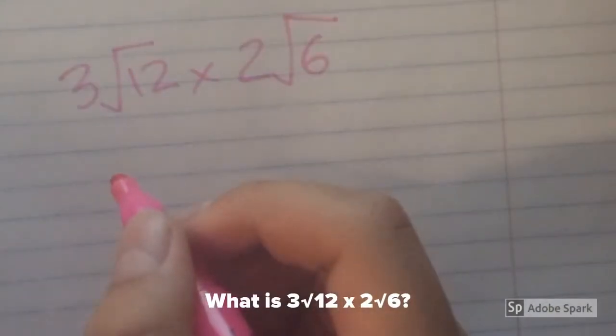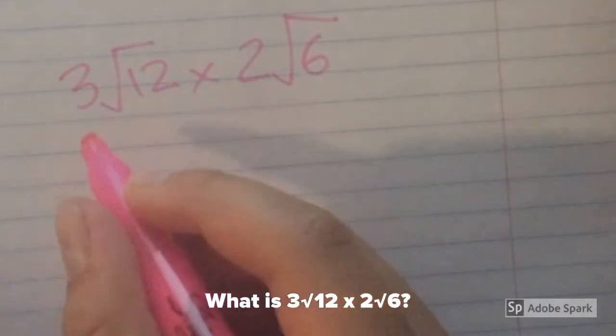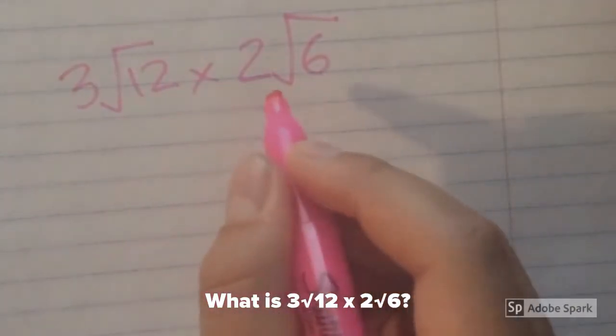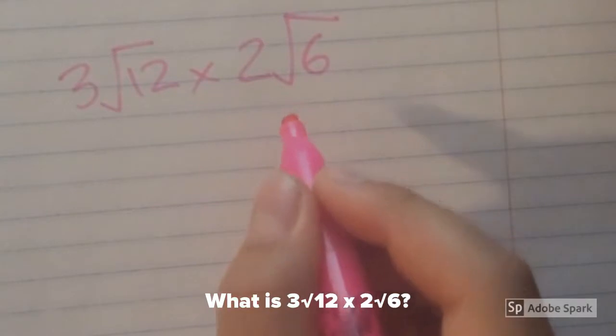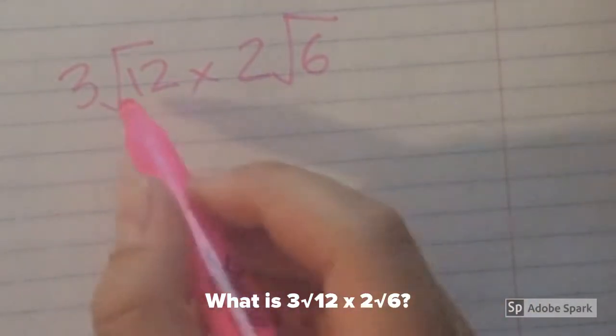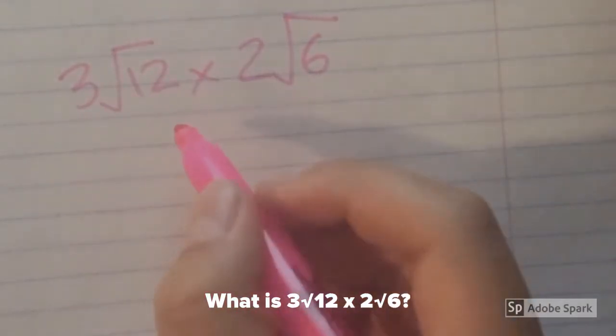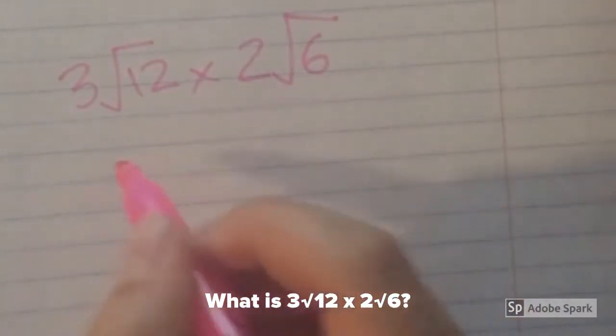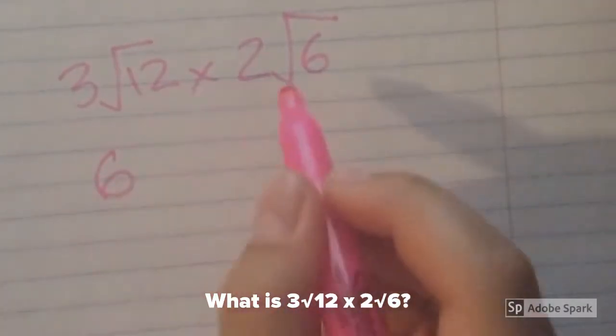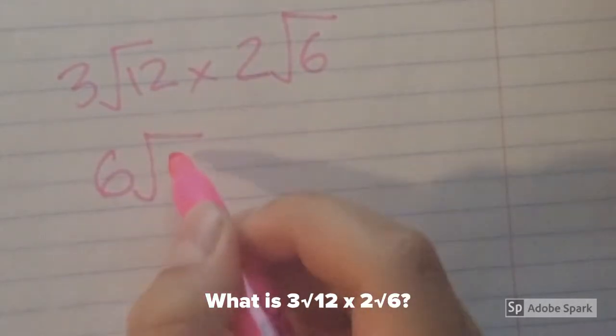Our first problem asks, what is 3 radical 12 times 2 radical 6? When we multiply radicals, we multiply the numbers outside and inside of the radicals. So, 3 times 2 equals 6, and 12 times 6 equals 72. So now we have 6 radical 72.